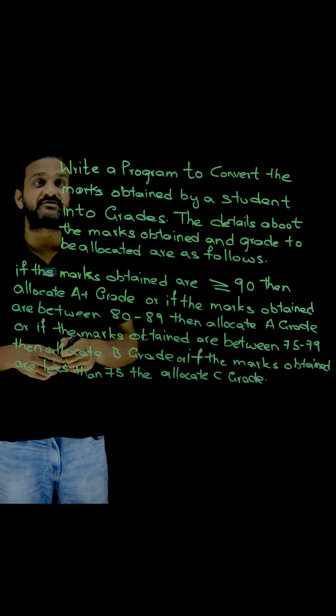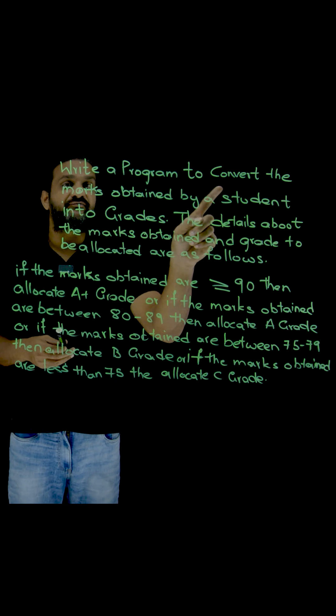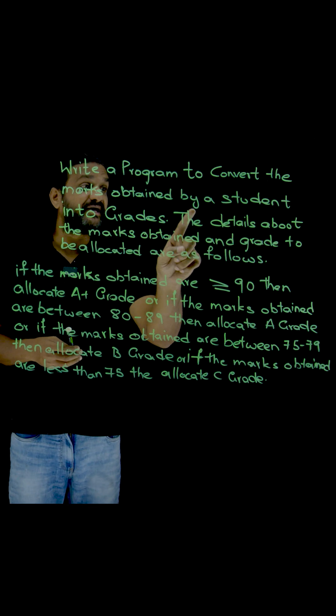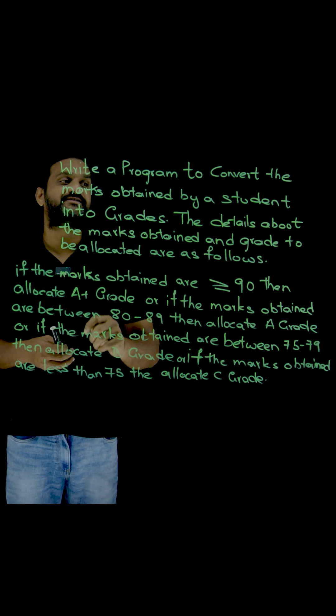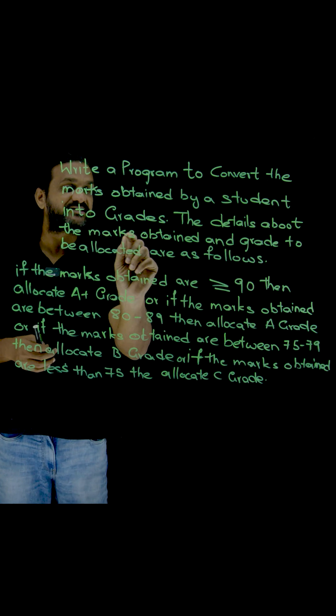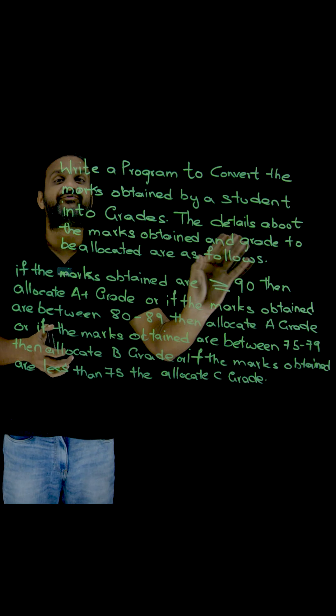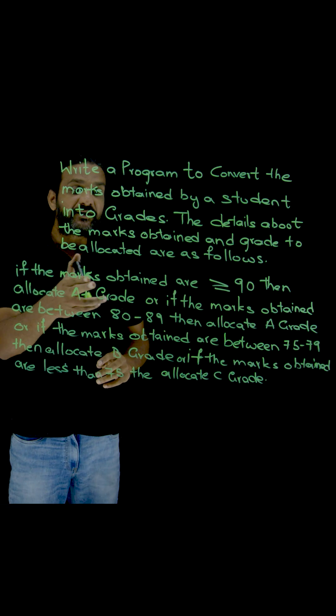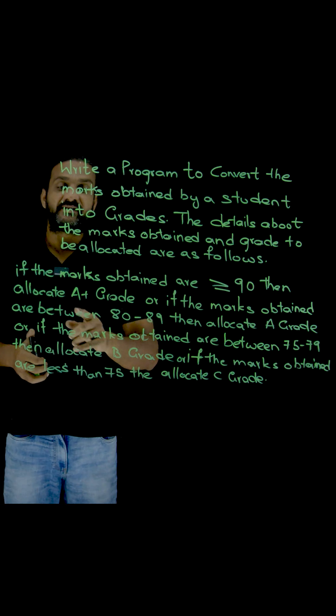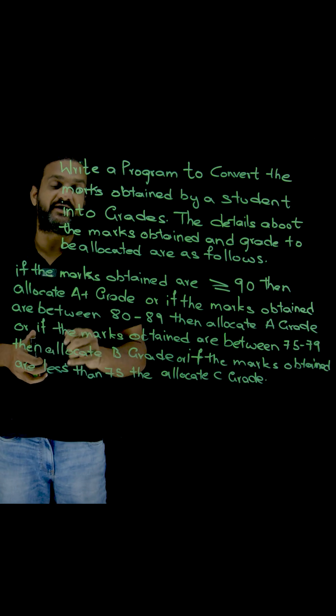So the problem statement is as follows: Write a program to convert the marks obtained by a student into grades. The details about the marks obtained and the grades to be allocated are as follows. If the marks obtained are greater than or equal to 90, then allocate A plus grade.